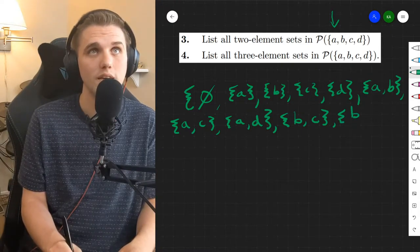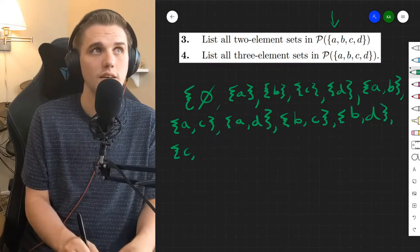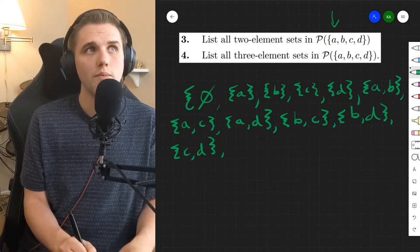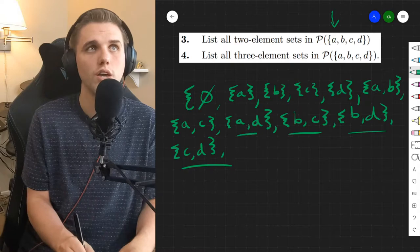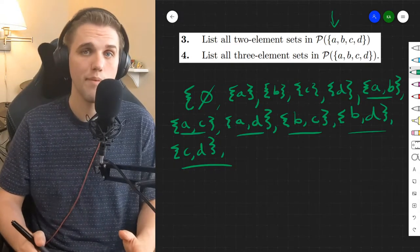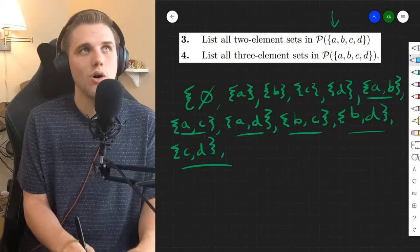We have {b, d} and then {c, d}. So this is the set. How many two-element subsets do we have? We have one, two, three, four, five, six. So the answer to problem three is six. But why is it six? So I have a question for you all.